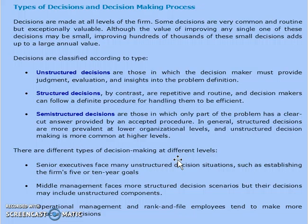Decisions are classified according to type. First, unstructured decisions are those in which the decision-maker may provide judgment, evaluation, and insights into the problem definition. Generally, this type of decision is required to be taken very rarely — its frequency is very less.